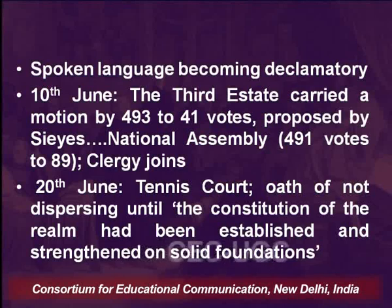On 10th June, the third state carried a motion by 493 to 41 votes, proposed by Sieyès, and that is how the National Assembly was formed. Ultimately, the figure was 491 votes to 89 — the clergy decided to join, not the nobility, the National Assembly. On 20th June came the famous Tennis Court incident, where an oath was taken of not dispersing until the constitution of the realm had been established on solid foundations. On 27th June, the king wrote to the presidents of the first two estates to join the National Assembly. There was dissension at court, movement of royal troops in Paris, and dismissal of Jacques Necker. Fear and apprehension grew, and there was a threat of dissolving the National Constituent Assembly. A citizens' militia was formed by the top two orders to protect their property, but they failed in the face of mob fury.